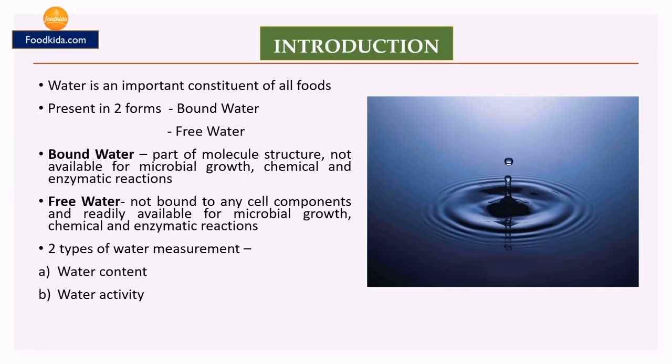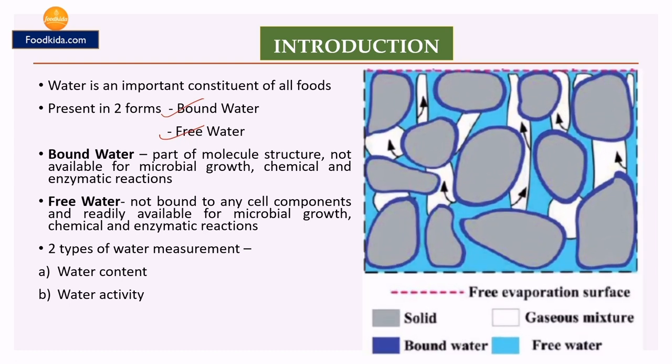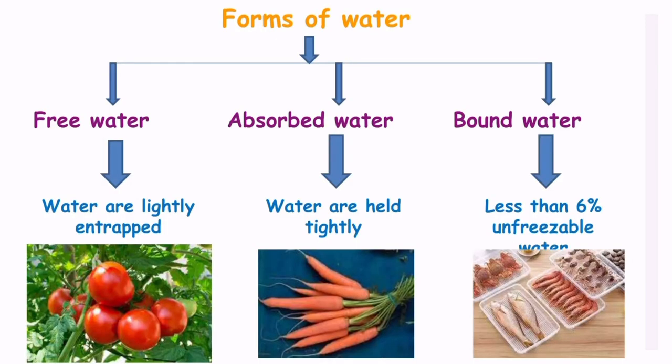Water is present in two forms: bound water and free water. Bound water is the water that is bound to cell components such as ions, surfaces, molecules, proteins, carbohydrates, etc., and which is not available for microbial growth or chemical and enzymatic reactions. Free water is the water which is not bound to any cell component and is readily available for microbial growth and chemical or enzymatic reactions. It is very important to know the amount of free water for the preservation of food, as it is available for microbial spoilage.